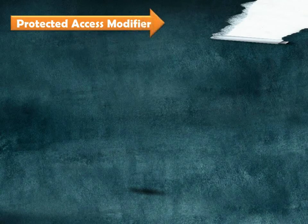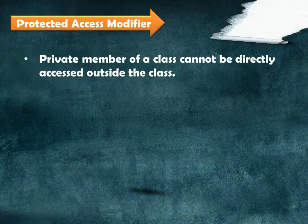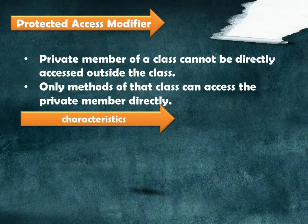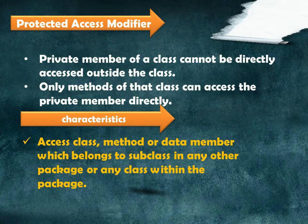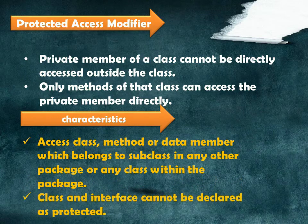Next, the protected access modifier. A private member of a class cannot be directly accessed outside the class; only a method of that class can access the private member directly. Methods and data members can only be accessed by the subclasses in other packages or any class within the package of the protected data member's class. The class or interface cannot be declared as protected.